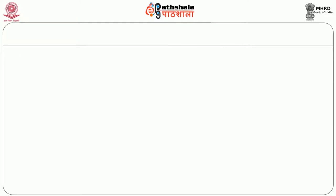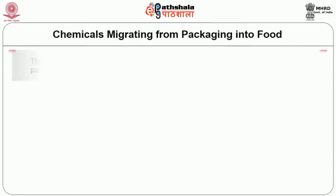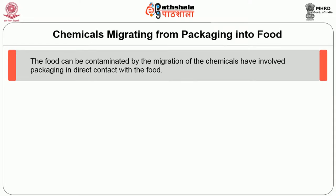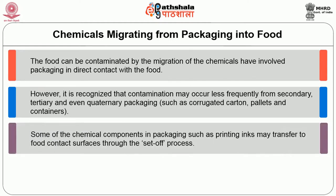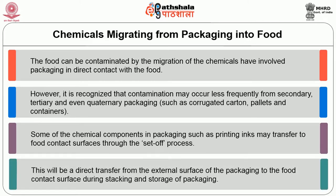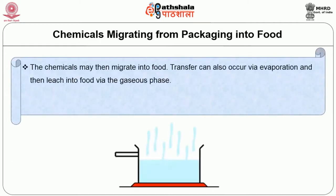The food can be contaminated by migration of chemicals from packaging in direct contact with the food. However, it is recognized that contamination may occur less frequently from secondary, tertiary and even quaternary packaging such as corrugated carton, pallets and containers. Some chemical components in packaging such as printing inks may transfer to the food contact surfaces through the set-off process. This is a direct transfer from the external surface of the packaging to the food contact surface during stacking and storage. The chemicals may then migrate into food, and transfer can also occur via evaporation and then leach into food via gaseous space.